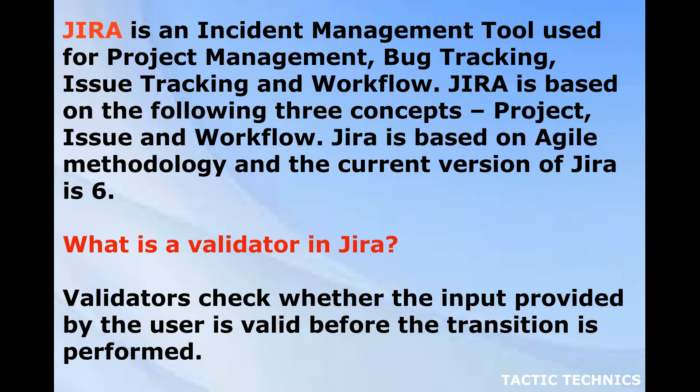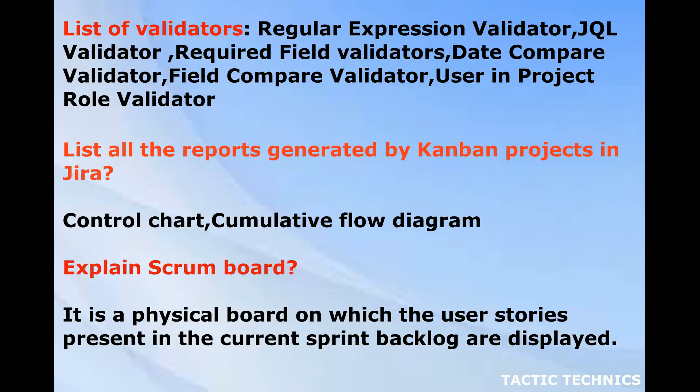Jira is based on agile methodology and the current version of Jira is six. What is a validator in Jira? Validators check whether the input provided by the user is valid before the transition is performed. List of validators: regular expression validator, JQL validator, required field validators, date compare validator, field compare validator, user and project role validator.